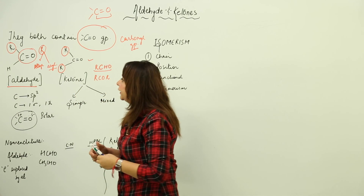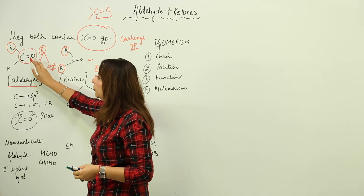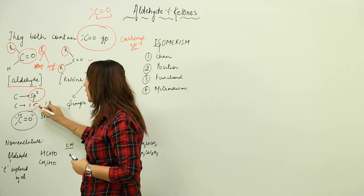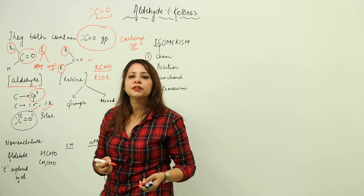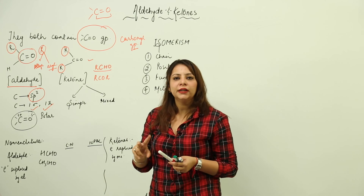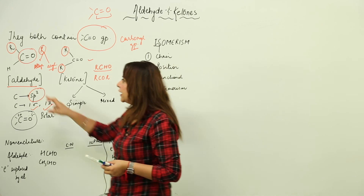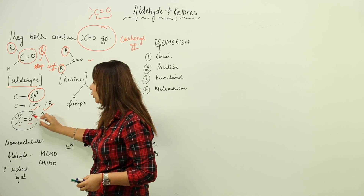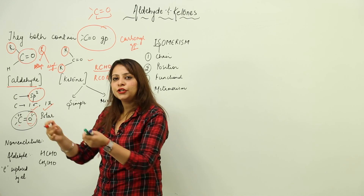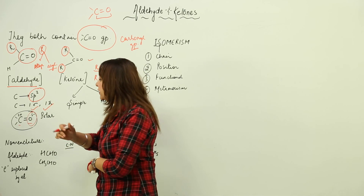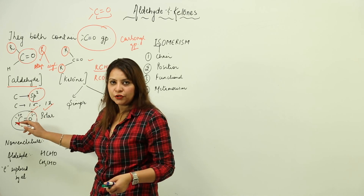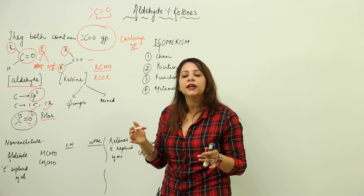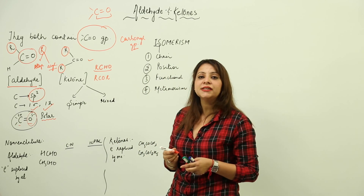In the carbonyl group, carbon has a double bond with oxygen, so it is sp2 hybridized. There are two bonds: one Sigma and one pi — the first bond is always Sigma and the second is pi. There is a large electronegativity difference between C and O; oxygen is more electronegative, so it attracts the shared pair more towards itself, acquiring a partial negative charge while carbon acquires a partial positive charge. The C=O bond is therefore polar in nature.